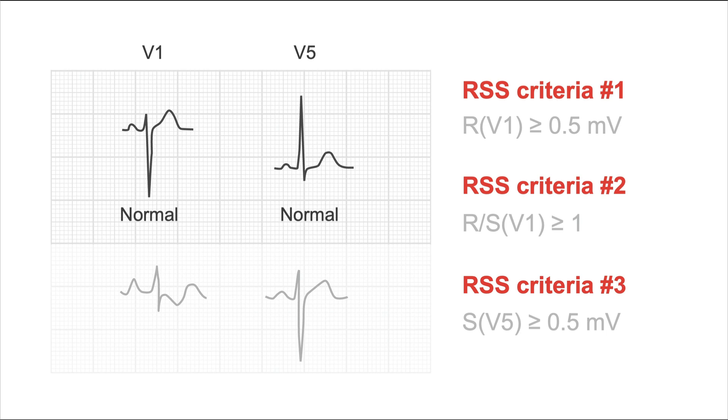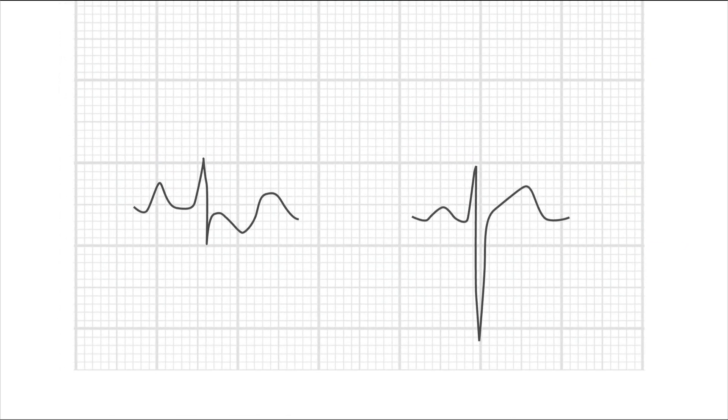Therefore, these two are definitely normal with respect to right ventricular hypertrophy. Next, let's turn to these QRS complexes at the bottom of the image. Again, let's use our RSS criteria to assess them. Let's look at the R in V1 first. Is it above 0.5 millivolts? Let's count.